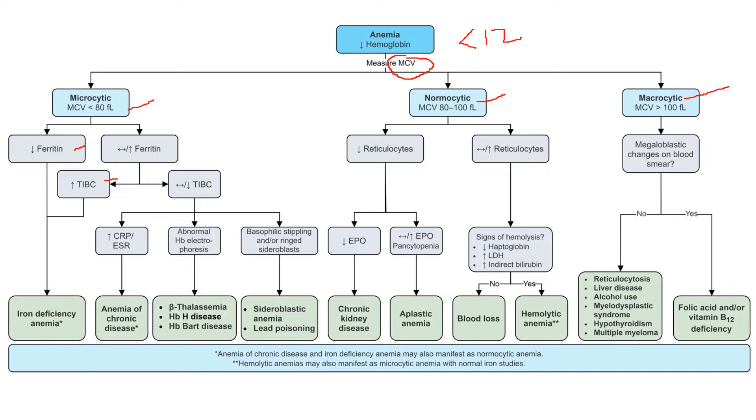Ferritin is your iron storage molecule and TIBC is your iron transporter. If my ferritin is high, that means my body wants to store iron. If my ferritin is low, that means my body is losing iron and the stores are running low. If my TIBC is high, then my transferrin molecule is high and my body wants to capture iron. If my TIBC is low, my body does not want to capture iron because of a disease process going on.